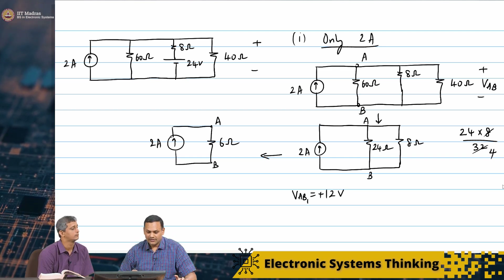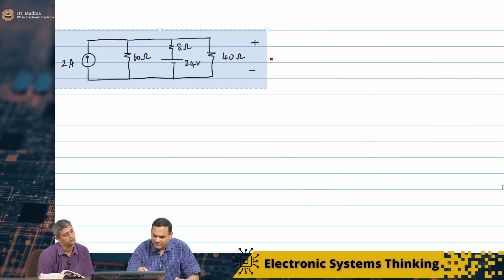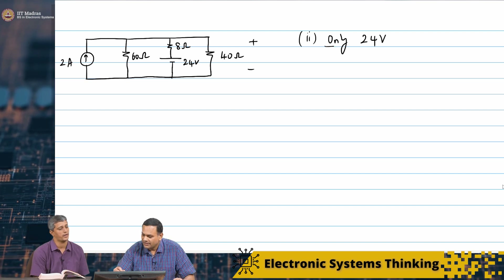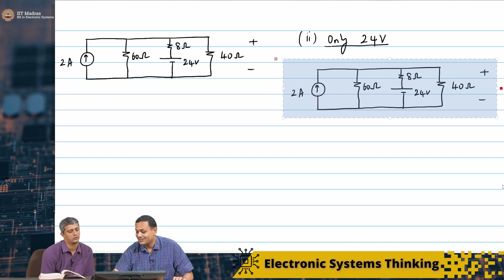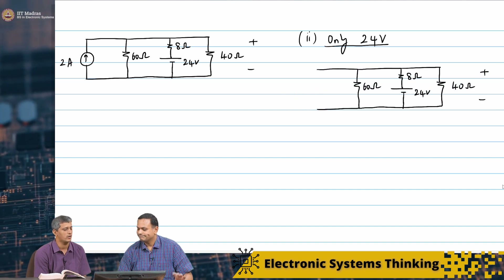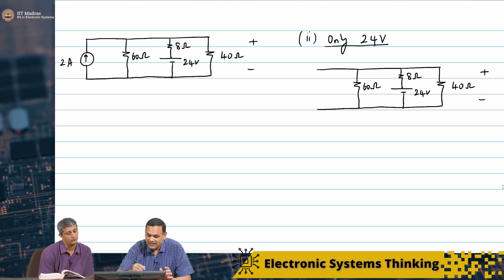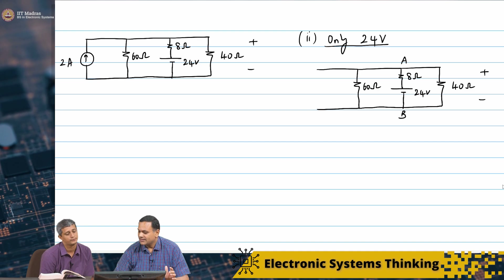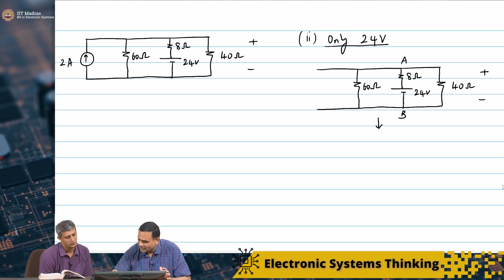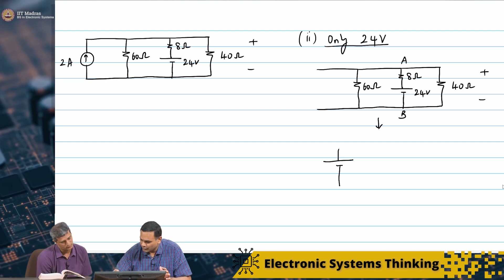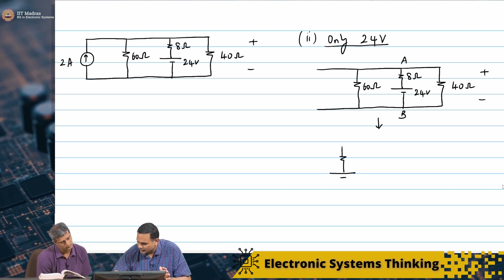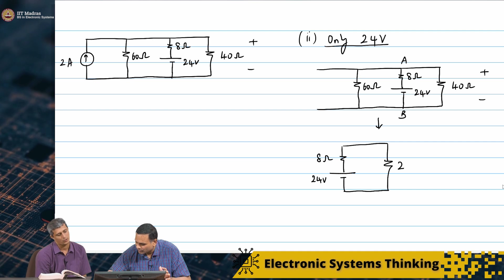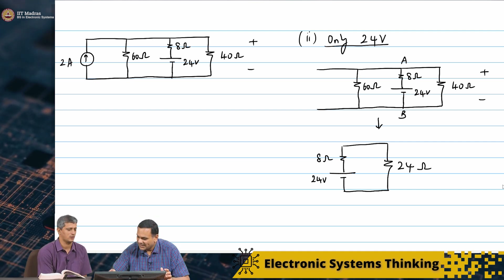This is when I consider only the 2 ampere source. Next step is to consider only the 24 volts. I need to open circuit the 2 ampere source — just remove it. Again maintaining A and B: 60 and 40 in parallel is 24 ohms. This basically becomes a 24 volt battery in series with 8 ohms, in series with 24 ohms, which represents 60 in parallel with 40 ohms. This is A and this is B.